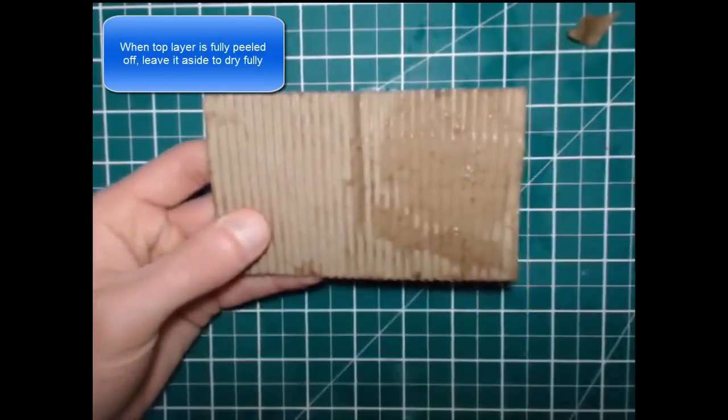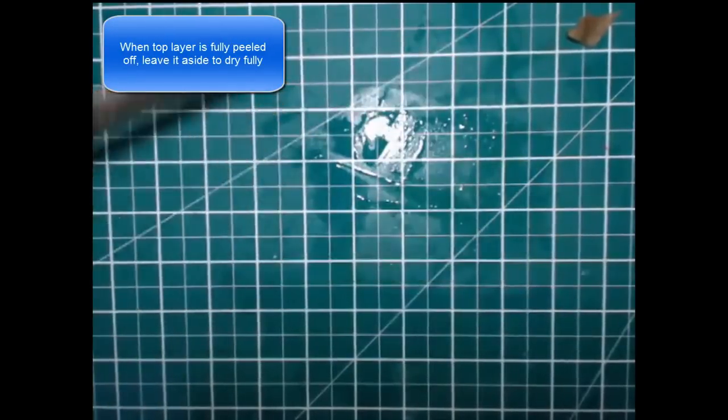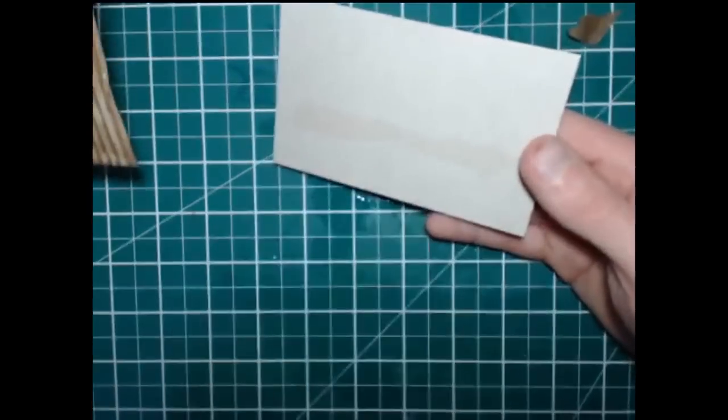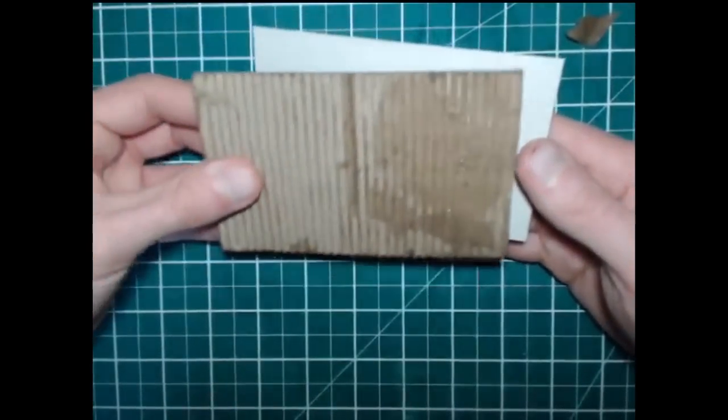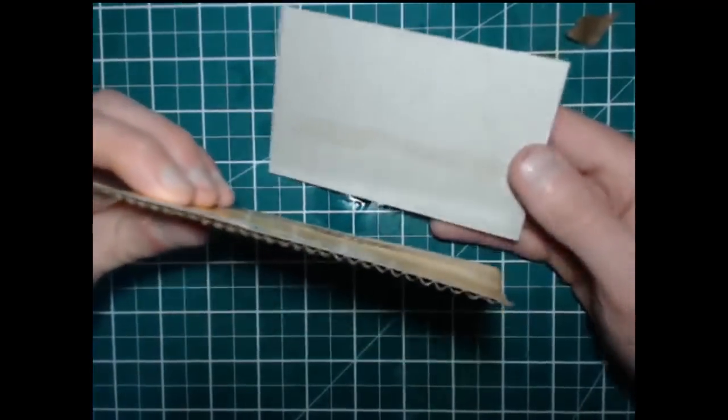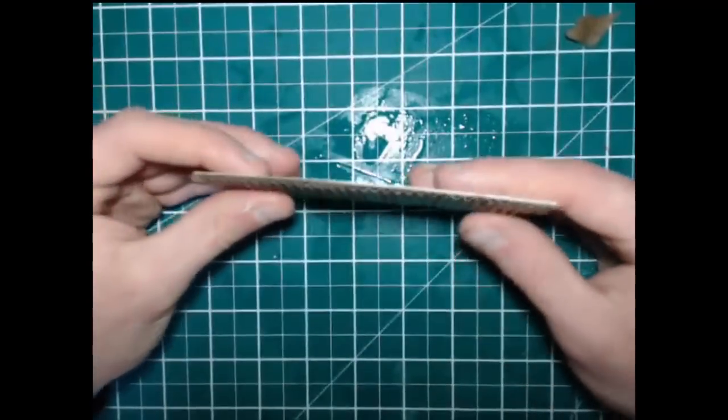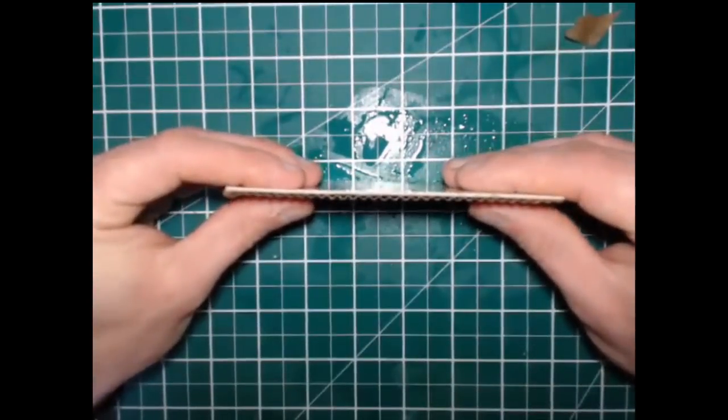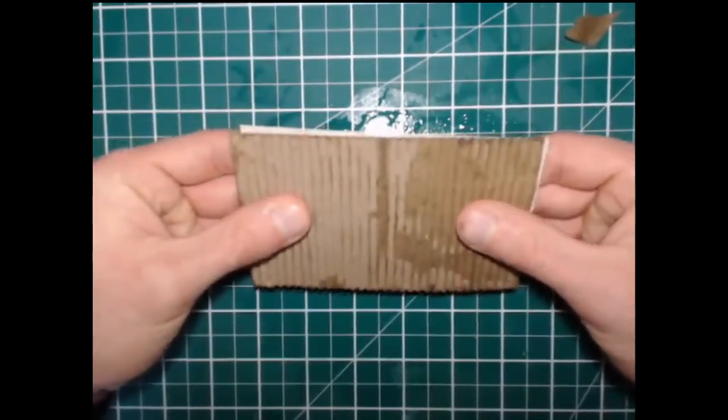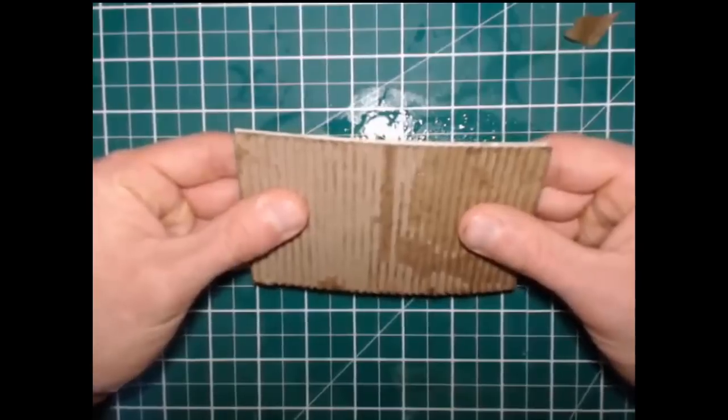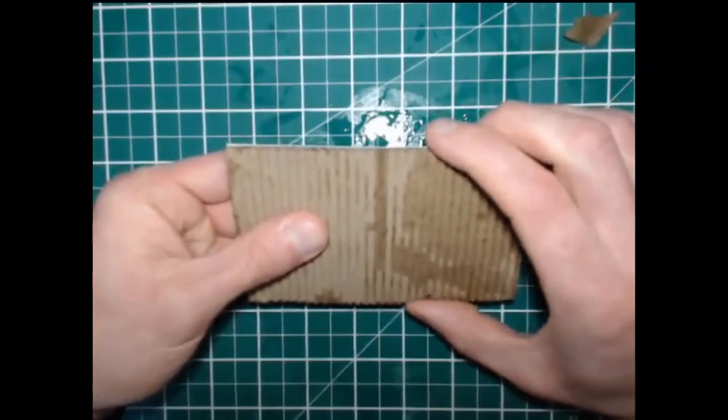And we peel it off that way. When you have all the top layer of cardboard pulled off leave it aside to dry out fully and then get the bottom section of your roof and we're actually going to glue this cardboard onto our roof like that.